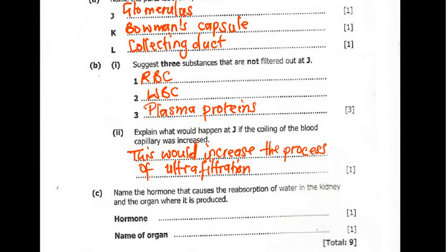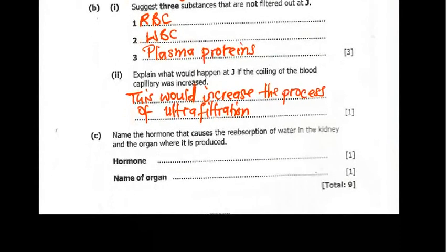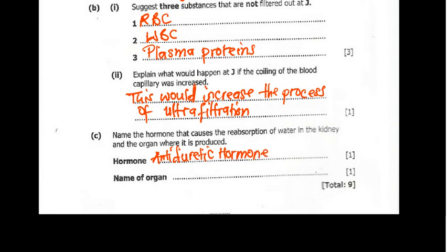Question 3C asks to name the hormone that causes the reabsorption of water in the kidney and the organ where it is produced. The hormone is the antidiuretic hormone, which can also be written as ADH — that's just a shortcut, and writing ADH is still acceptable. The organ that produces it is the pituitary gland.